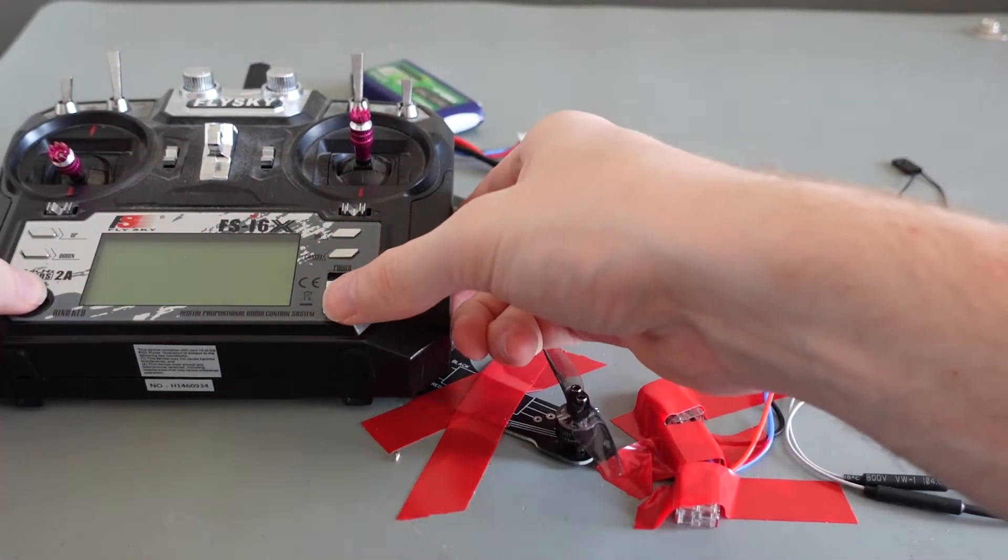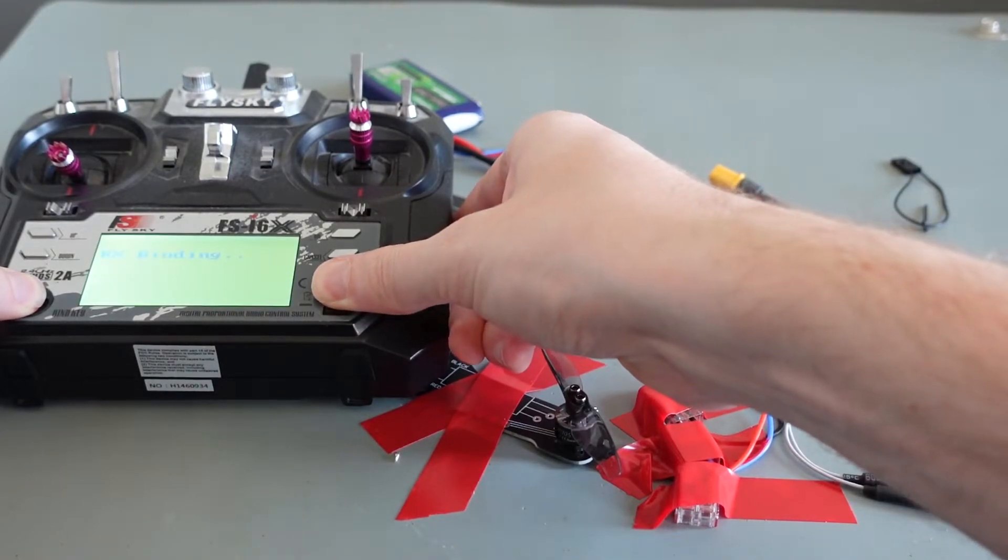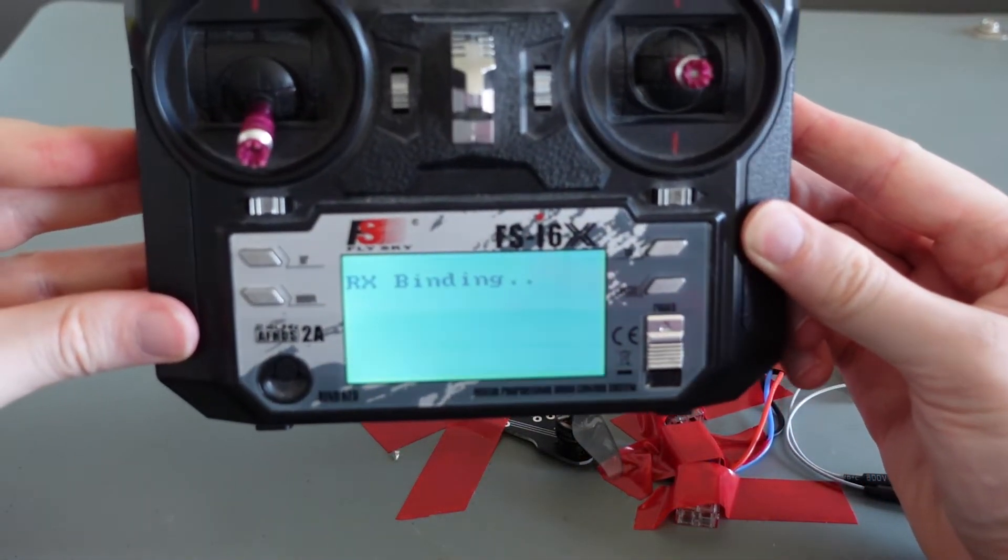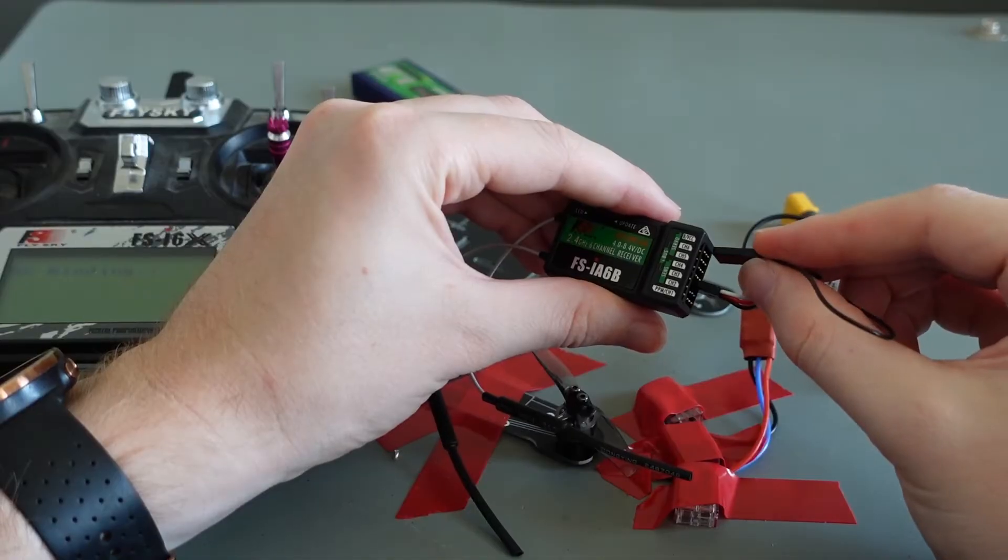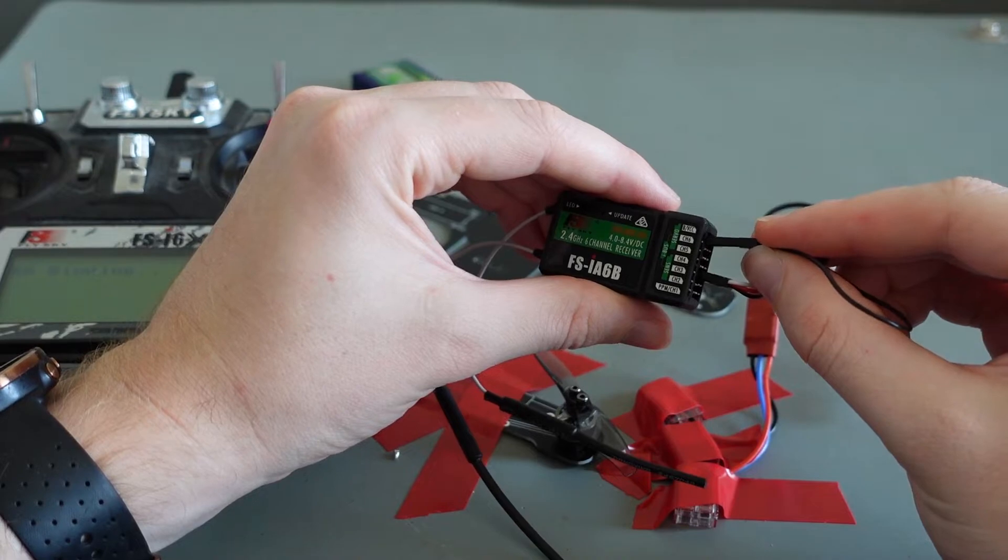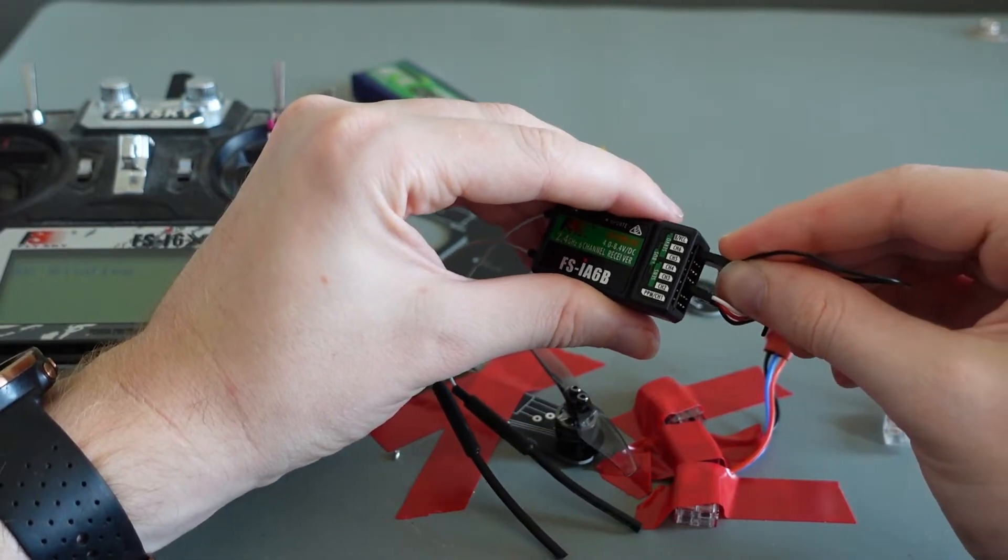Turn on the power button of your radio transmitter while simultaneously holding the bind key button. The text RX binding should be displayed. Now connect the bind plug with the B/VCC pins on the receiver.